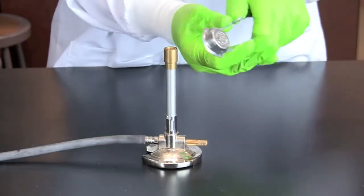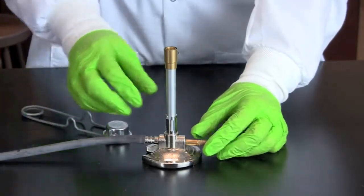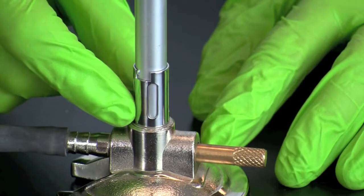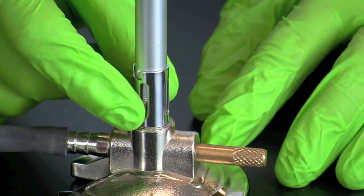Once you hear the gas, ignite the burner and set the height of the flame by adjusting the amount of gas. The temperature of the flame can be adjusted by rotating the collar to control the flow of oxygen.